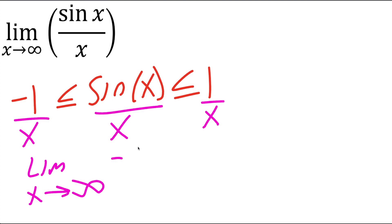So negative 1 over x. Now negative 1 divided by x, and when you plug in infinity for x, you get negative 1 divided by a huge number, which is 0.